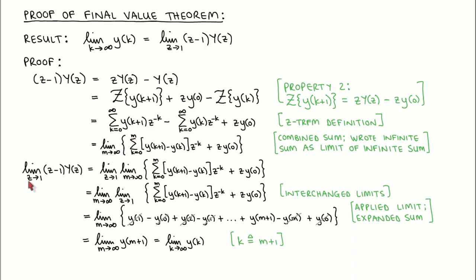Next, we apply the limit as Z tends to 1 to this, which is then equal to the right-hand side of the theorem. We interchange the limits in this line. We then apply the limit as Z tends to 1, and we write out the sum in this line.